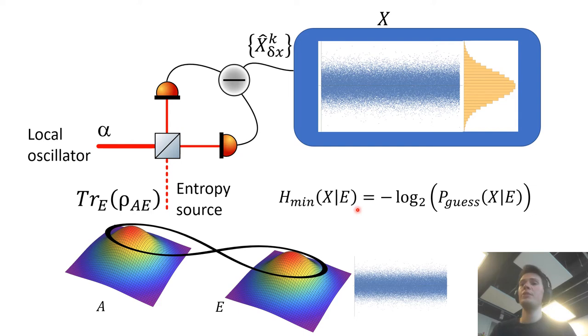One way to estimate this quantity would be to do a full tomography of your mode and then find all compatible two mode states compatible with your measurements and from that find the worst case scenario and estimate Eve's guessing probability. But this is a bit complicated and there is a better way to estimate the min entropy.